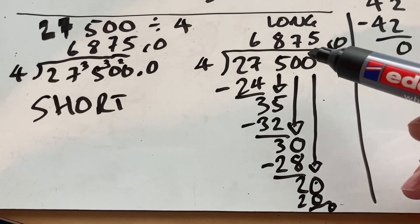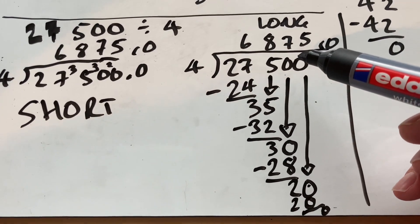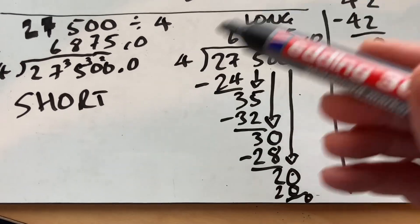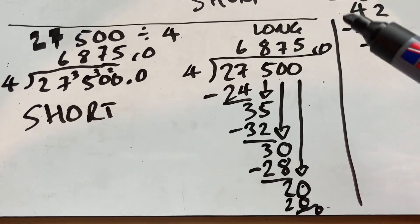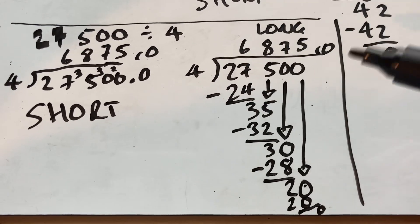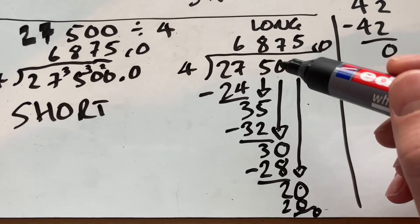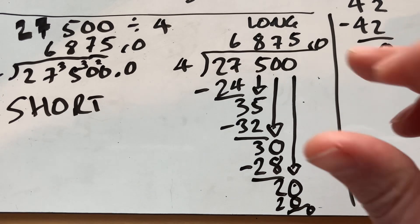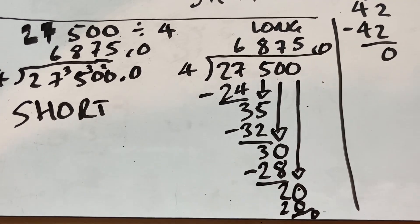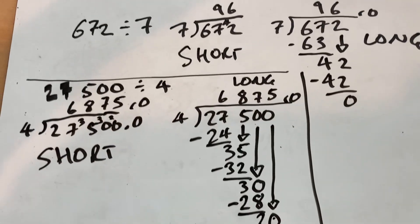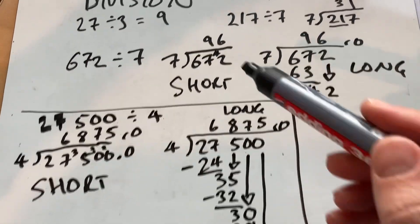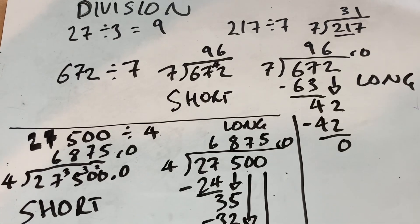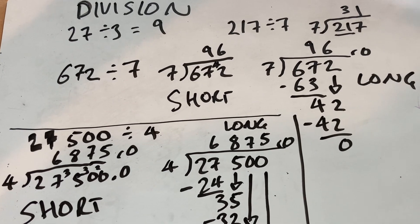Strangely enough, the next time you see long division is actually in polynomial division in A-level maths. It seems to be forgotten right through secondary school and then re-emerges at A-level when you need to do long division for some algebra — but it's the same technique, just with algebra rather than numbers. That's some examples of short and long division, using our times tables. Thanks for watching — don't forget to like, subscribe, and share.